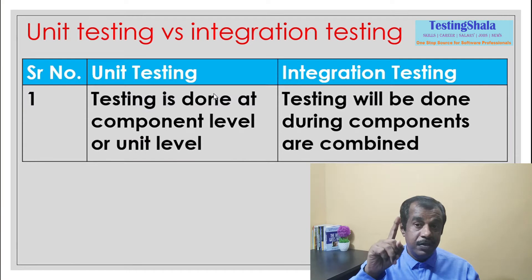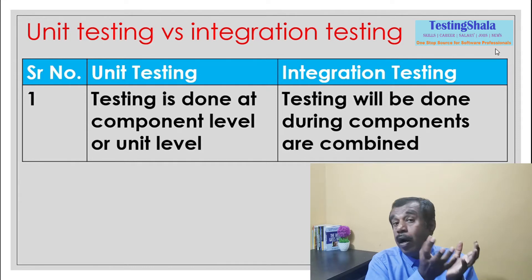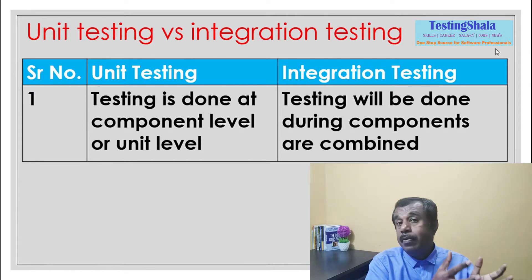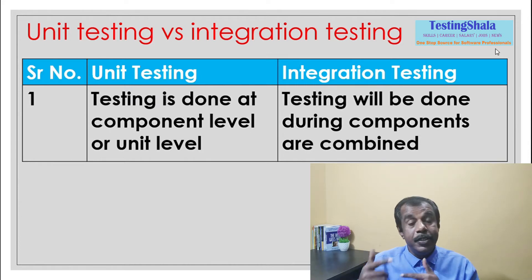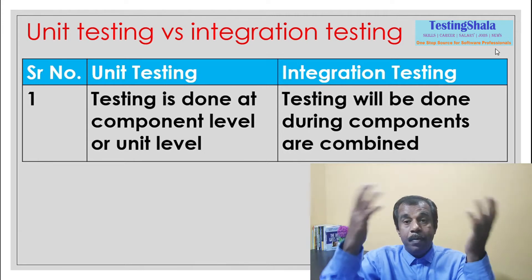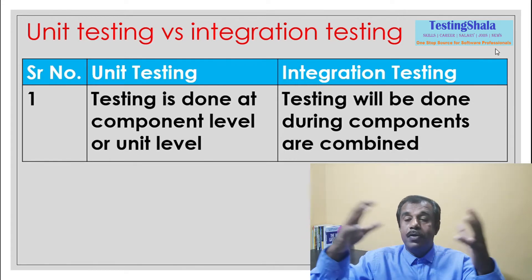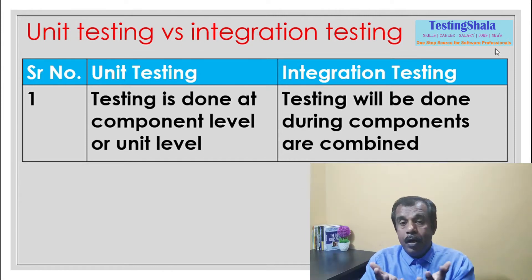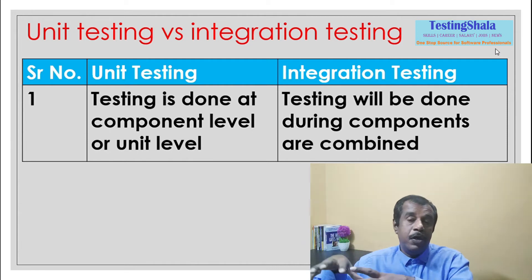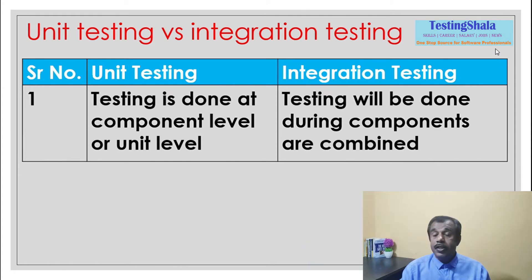The first difference is that unit testing is done at the module level or at the component level — that is the main aspect of unit testing. Integration testing is done when two or three modules or components are clubbed together or combined. At that point we check all the interfaces and all the integration points across those components, which is called integration testing.